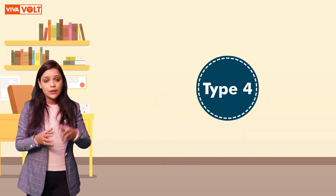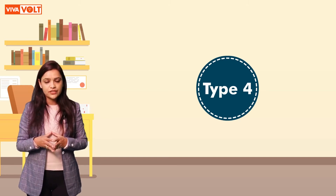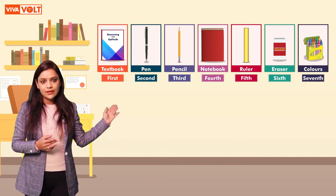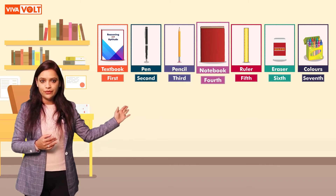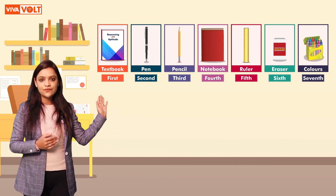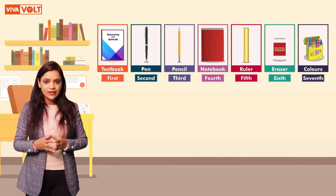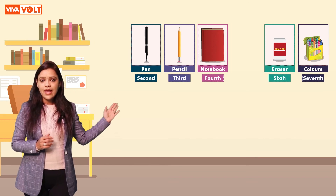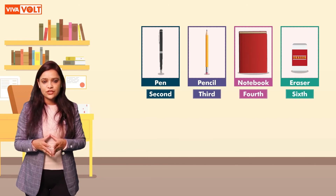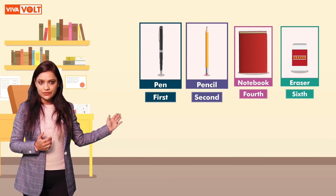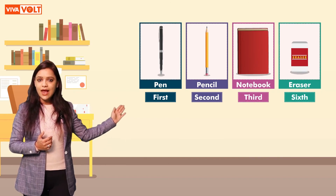Type 4. In this type of question, we need to identify the position or rank of an object or person after removing some objects or persons from the set. Look at these objects in a series: Textbook, Pen, Pencil, Notebook, Ruler, Eraser, Colors — numbered from positions 1st to 7th. If we remove Textbook, Ruler, and Colors from the series, the positions change: Pen comes at the first position, followed by Pencil at the second, Notebook at the third, and Eraser at the fourth position.